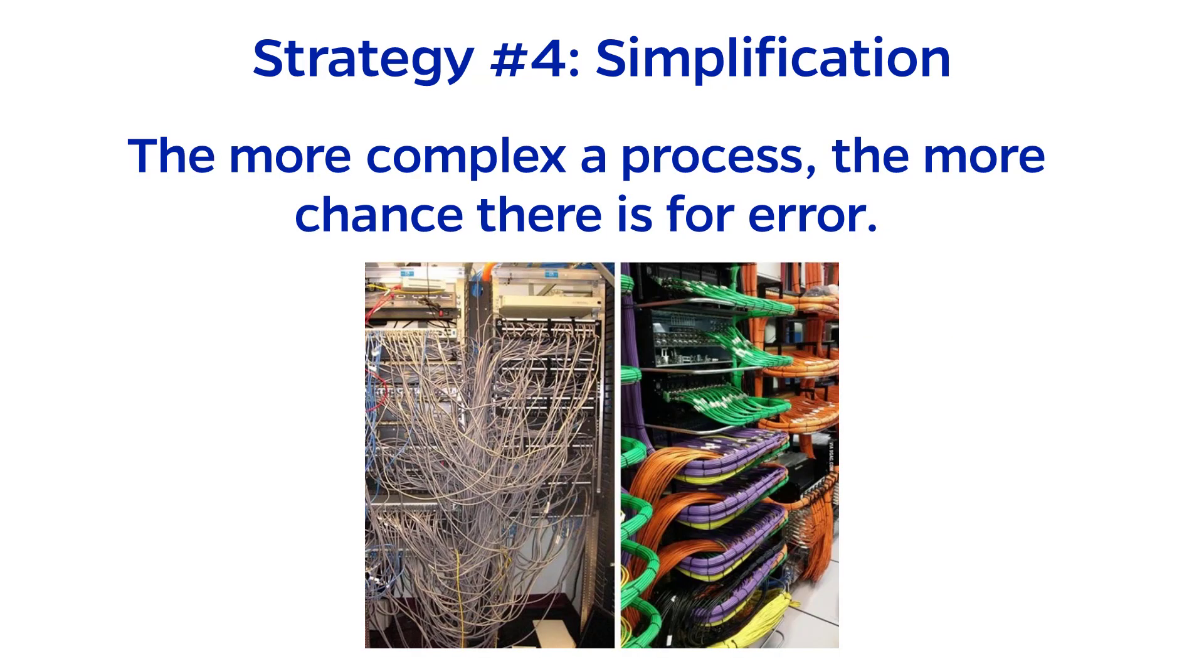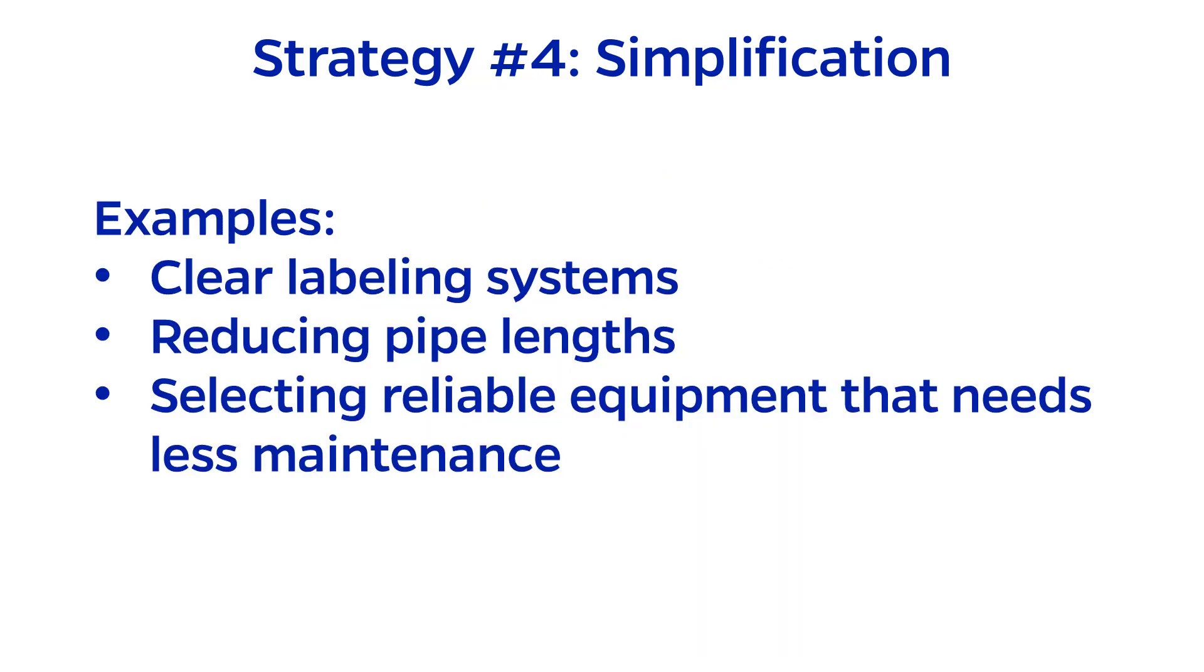The fourth and final strategy is simplification. The more complex a process, the more chance there is for error. The image I'm showing now is electrical cables instead of pipelines, but hopefully it's a good visual. Simplification includes clear labeling systems, reducing piping lengths and complexity, and selecting equipment with higher reliability that requires less frequent maintenance.